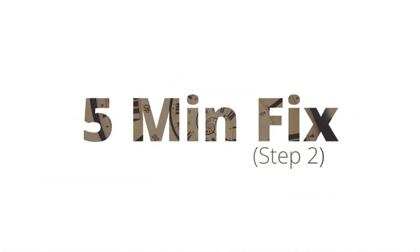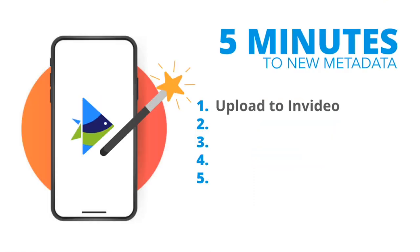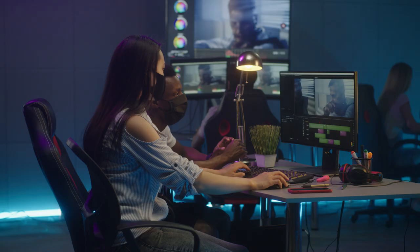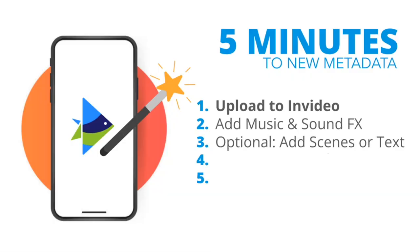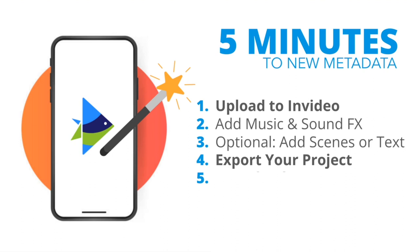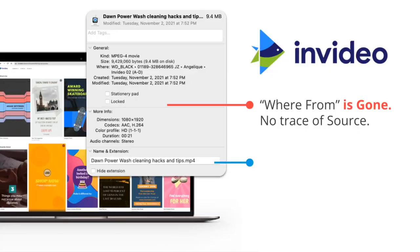But it's okay, because I got you and we can fix it in five minutes. First, we're going to upload it into the InVideo editor. There are other reasons to leverage all of the resources InVideo has to offer — like stock clips, sound effects, scenes, and all of the templates you can choose from. But right now we're just covering the metadata issue, so I'm going to show you what the difference is when you've exported it from InVideo. Now we can see what it looks like — and voila, it's clean. The 'where from' section that used to be here? It's gone. There's no trace of a source. It's like a new file all over again.